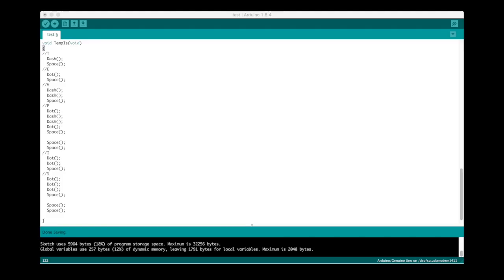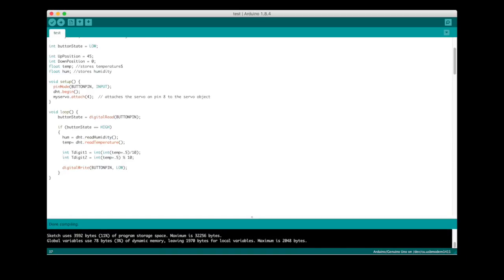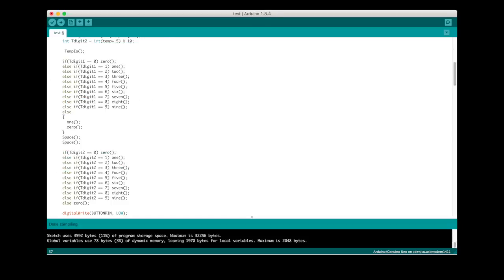We want a function to write out temp is before the actual temperature, which is just going to call our dot, dash, and space functions. We'll then write a function for each number. Next, we'll separate the temperature value into two digits to be printed separately, labeled tdigit1 and tdigit2. Lastly, we'll call the temp is function, followed by an if-else tree to decide which digit to print. And that's it.